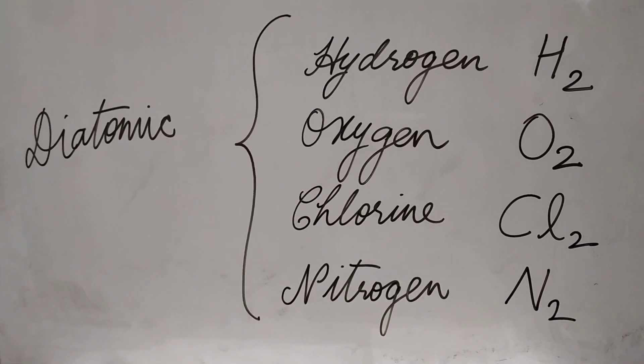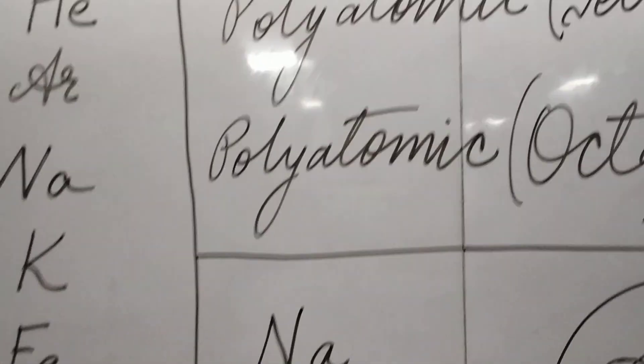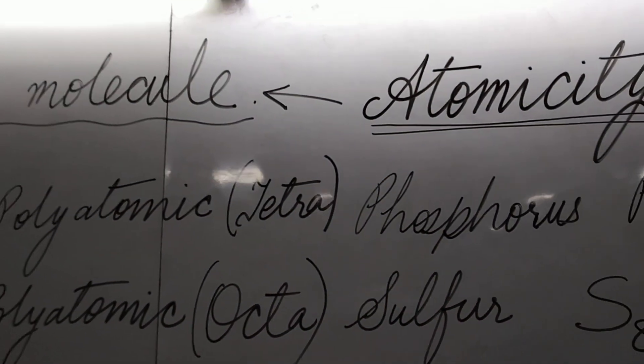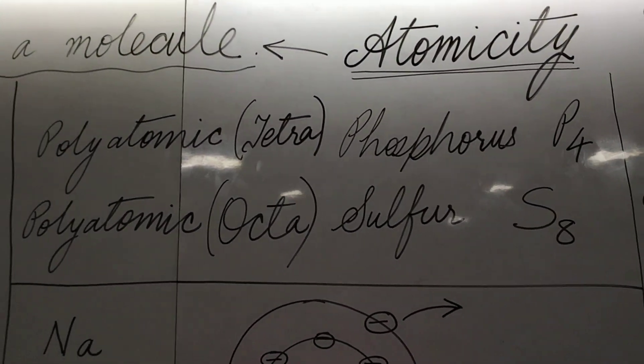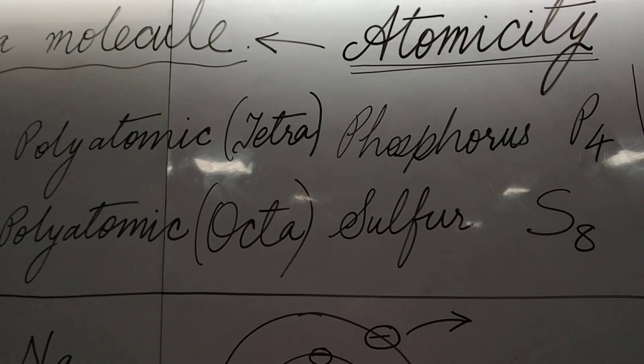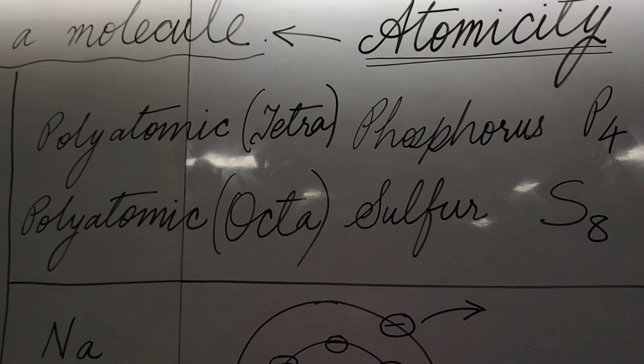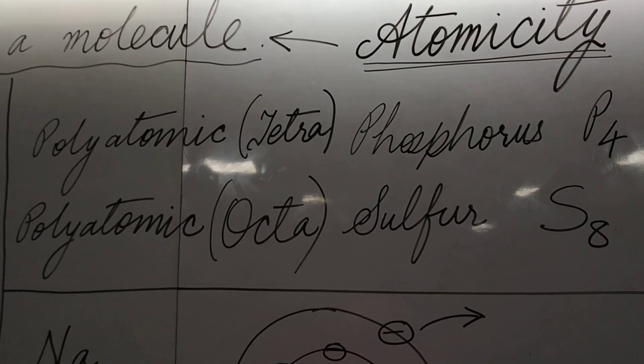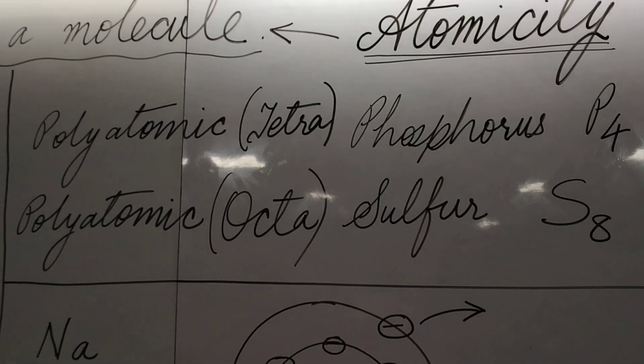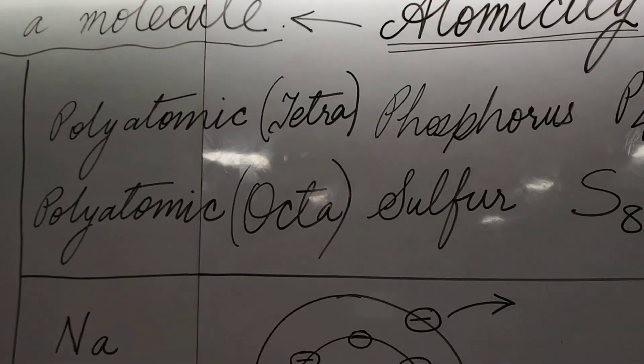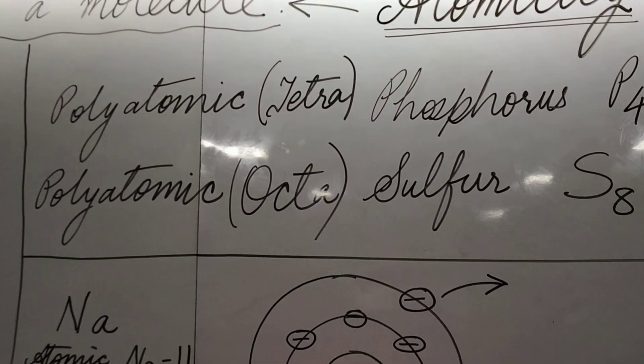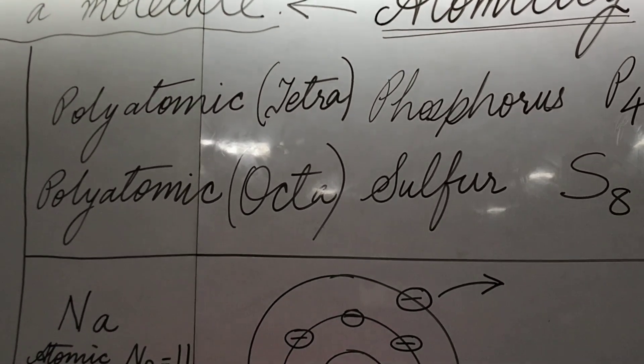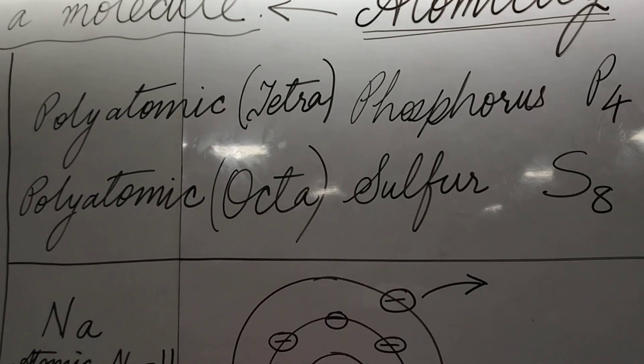Then you have polyatomic, that is the example of phosphorus, which is tetraatomic. Tetra means four, so one molecule of phosphorus will have four atoms of phosphorus. And another example is that of sulfur, wherein one molecule of sulfur will have eight atoms of sulfur.